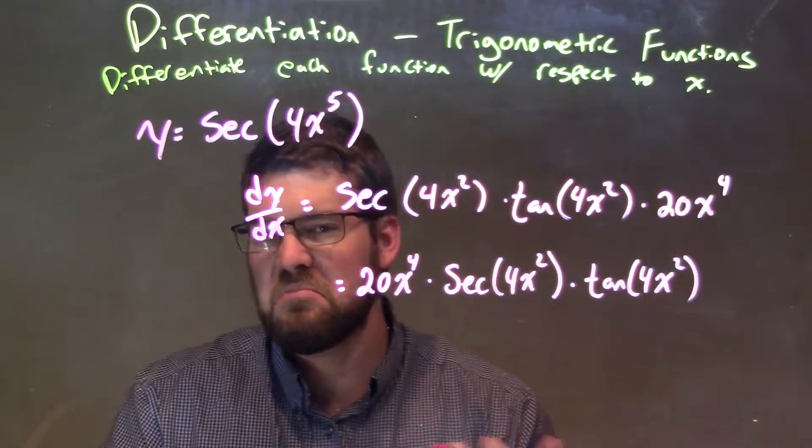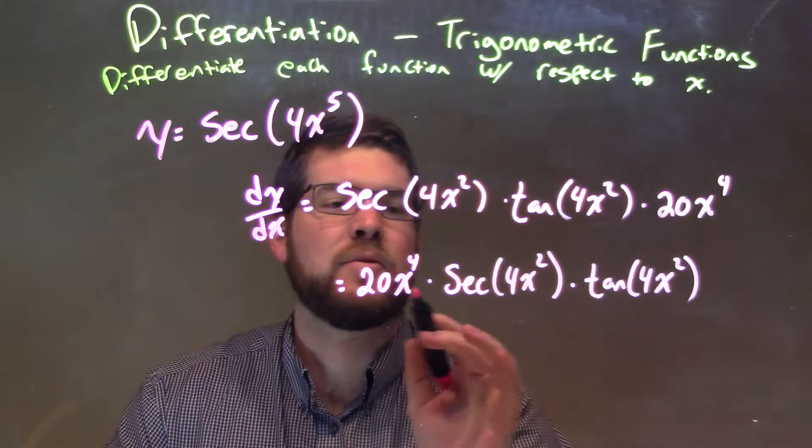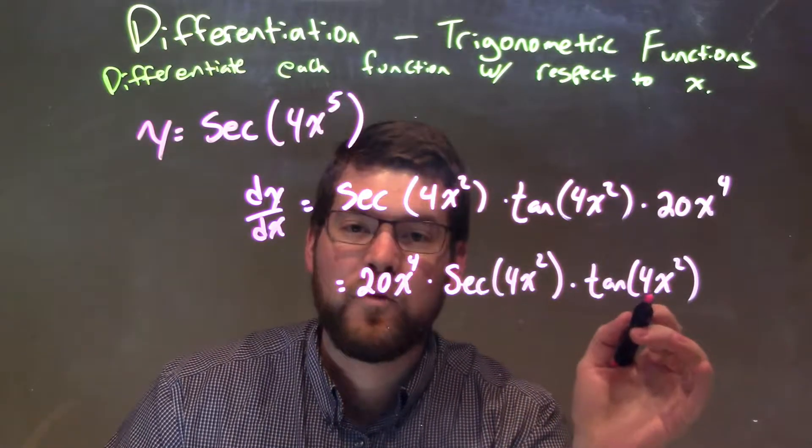I then rearrange, put that out front. Looks a little nicer. And so again, our final answer here is 20x to the 4th times secant of 4x squared times tangent of 4x squared.